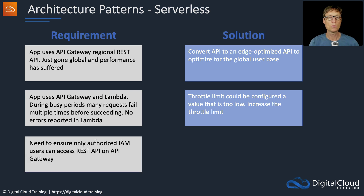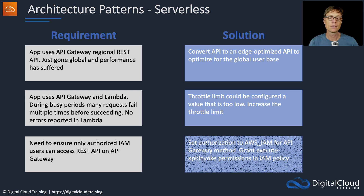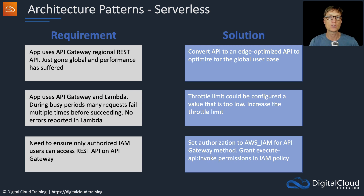To ensure only authorized IAM users can access a REST API on API Gateway, set the authorization to AWS IAM for API Gateway — this is done at the method level. You can then grant the execute-api:Invoke permissions in an IAM policy and attach that policy to a group or directly to users.